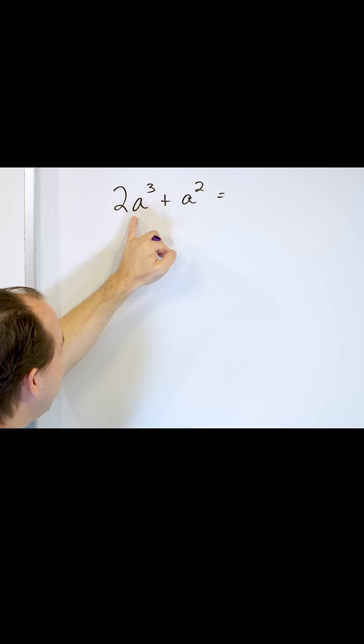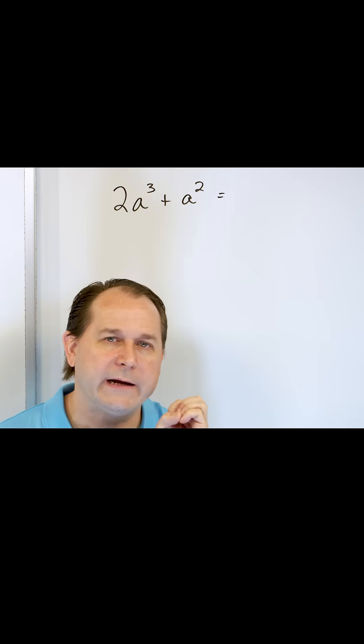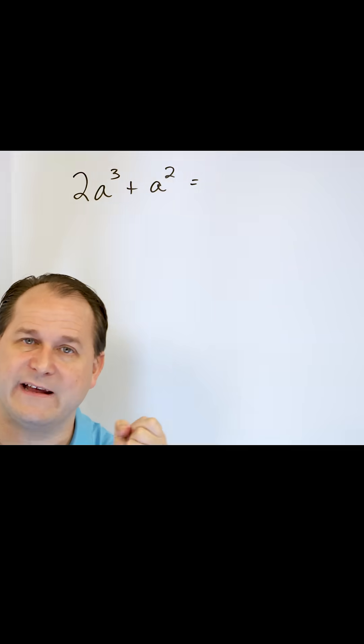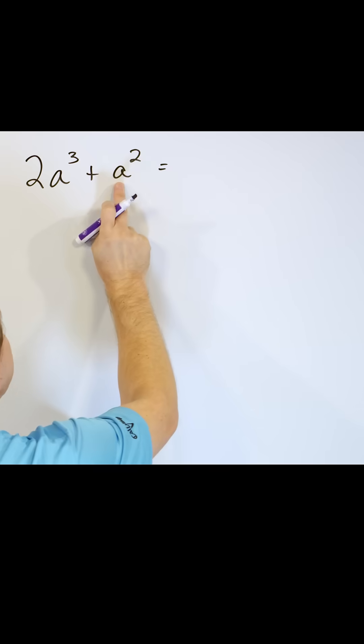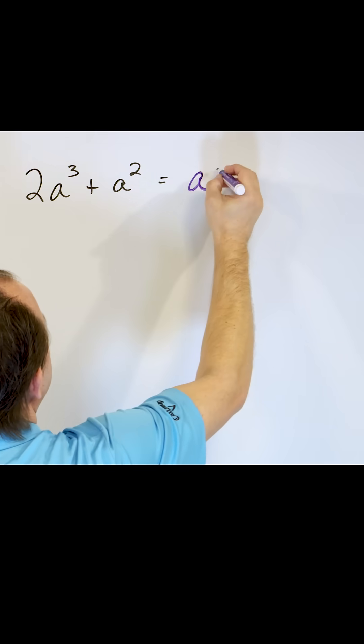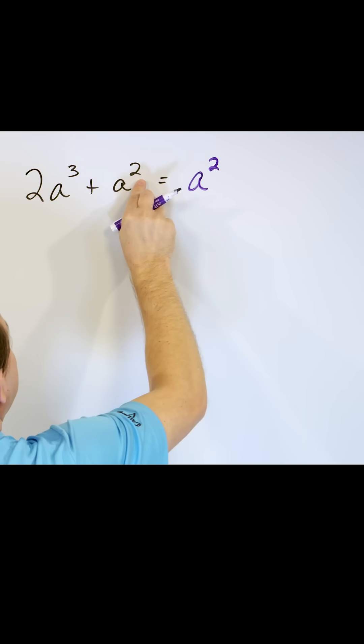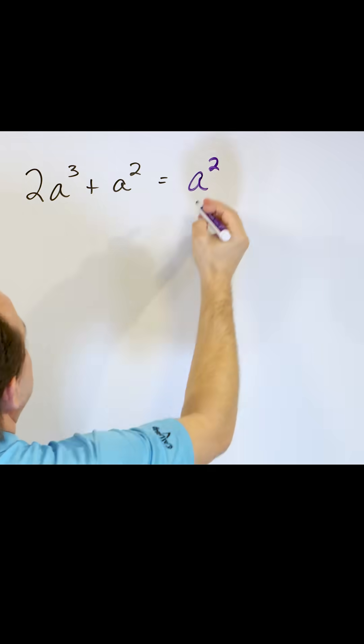I could pull a single a out. Yeah, I could do that, but you're always wanting to pull the largest thing out that you can. I can actually pull out an a squared. Why? Because I have two of these a's here and I have three of them here, so that's the largest thing I can pull out.